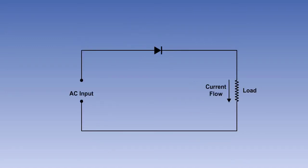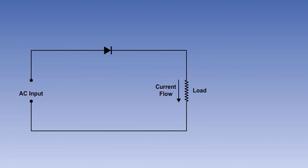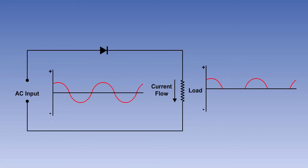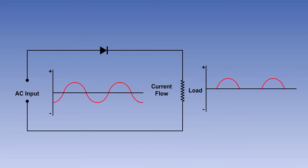If a diode rectifier is placed in an AC circuit, it will allow current to flow through the load in one direction only. This is termed half-wave rectification. Current will flow through the load in one half-cycle, but in the other half-cycle, when the polarity of the voltage is reversed, the flow of current will be blocked. This method of rectification will therefore produce pulses of DC in the secondary circuit, with gaps between the pulses.